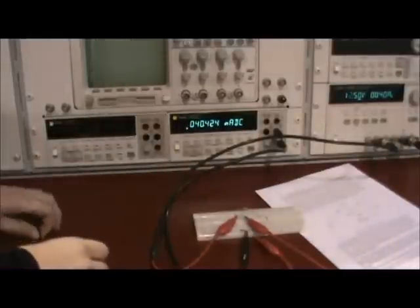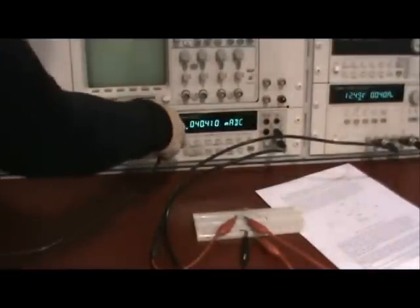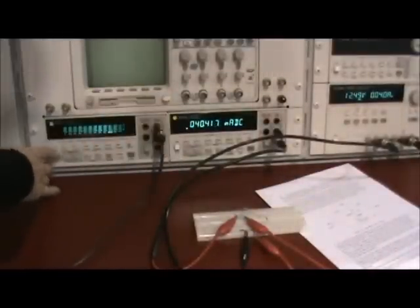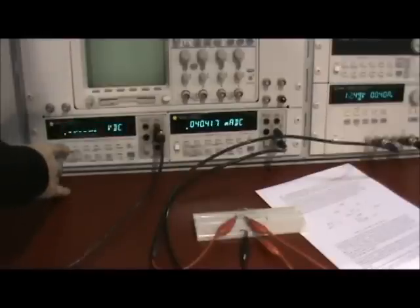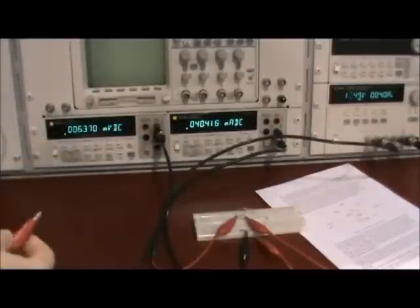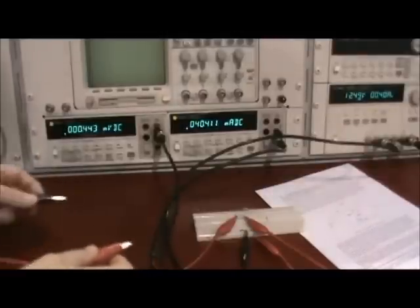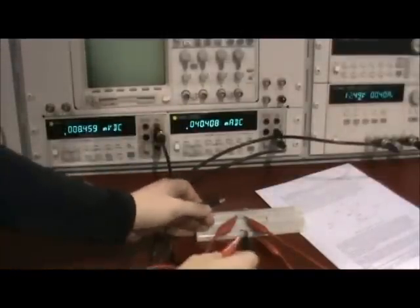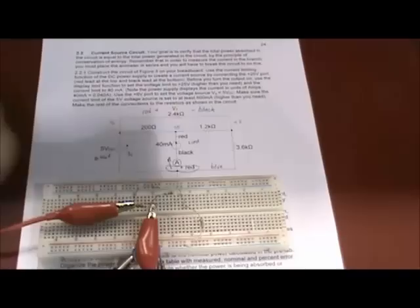Next I measure the voltage for each element, including the sources. Remember that since the voltmeter is set in parallel, I don't need to disrupt the circuit at all, and I make sure that I measure the voltage at the correct polarity as I labeled on my circuit with the positive end of the voltage connected to the red lead and the negative end of the voltage connected to the black wire or the black lead. And you should do this as you've defined it in your circuit.